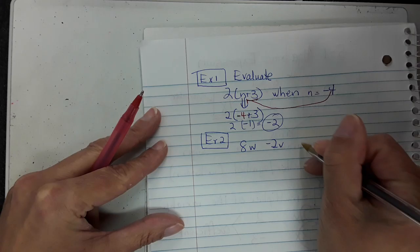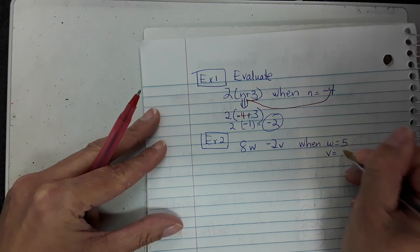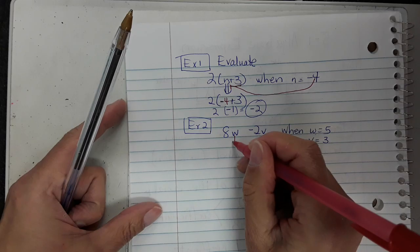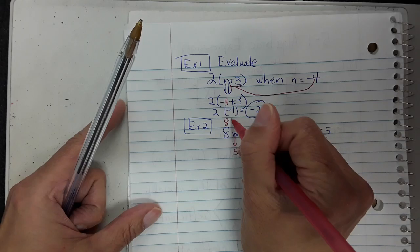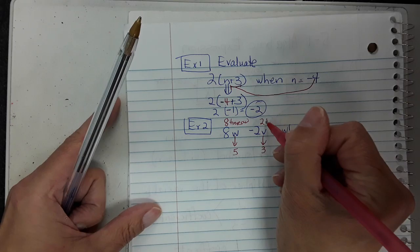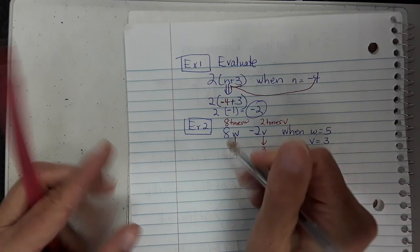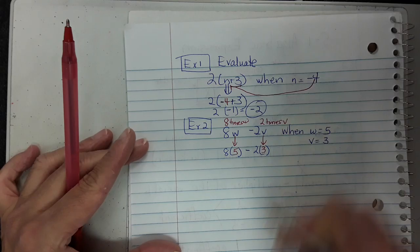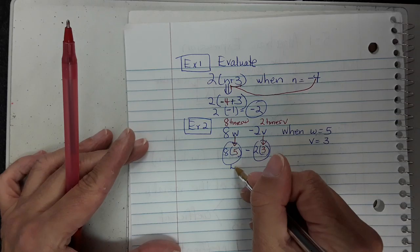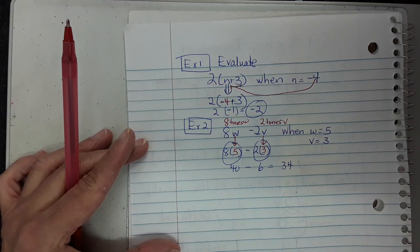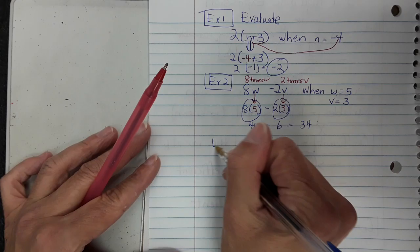Example 2: solve 8w minus 2v when w equals 5 and v equals 3. You plug the values in — 8 times 5, take away 2 times 3. When you don't see an operation, it means multiply. Do the multiplying first (PEMDAS): 8 times 5 is 40, and 2 times 3 is 6. Take away 6 from 40 and you get 34.